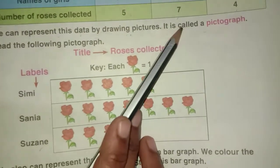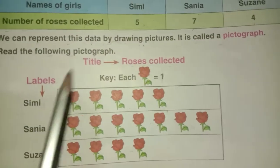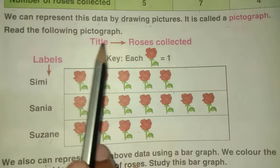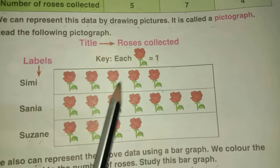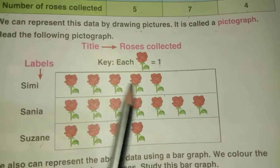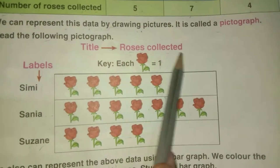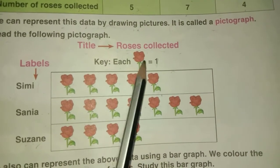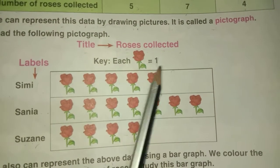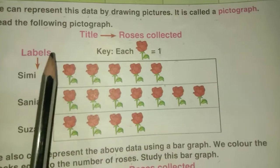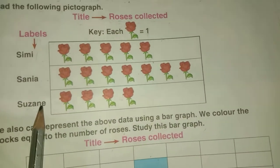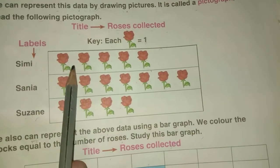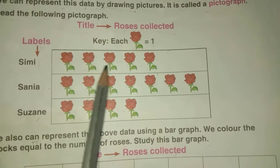We can represent this data by drawing pictures. This is called a pictograph. The title is 'Roses Collected.' The key shows that each flower symbol equals one rose. Labels show the names of the girls: Simi, Sanya, and Suzanne.